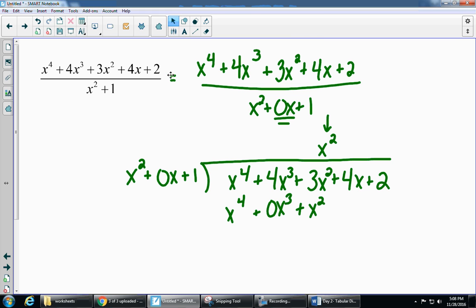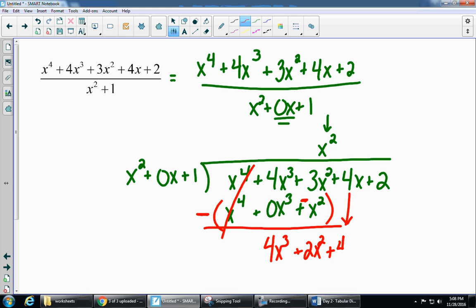So now remember, you are going to subtract the whole thing. So x to the fourth minus x to the fourth cancels. That's always our goal. We want those first terms to cancel. So I have 4x cubed minus 0x cubed, which is 4x cubed. And I have 3x squared minus x squared, so I get 2x squared. And now I can bring down that plus 4x.